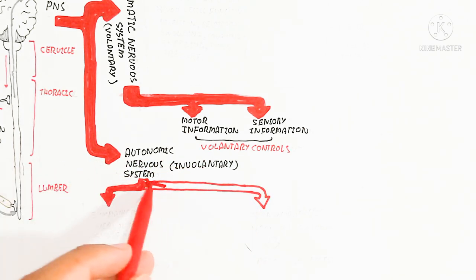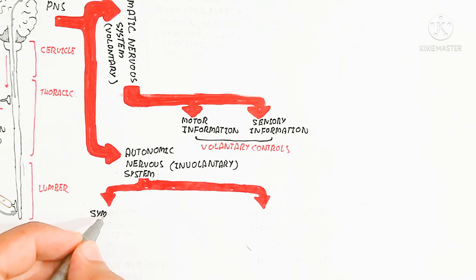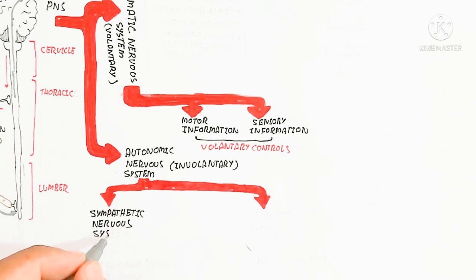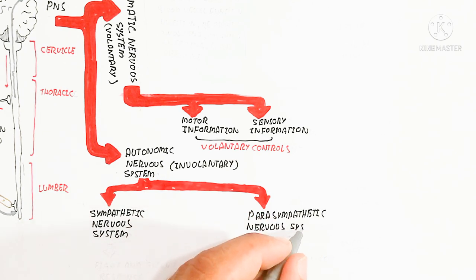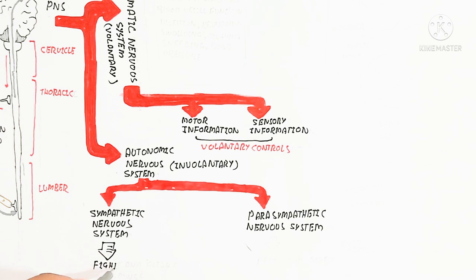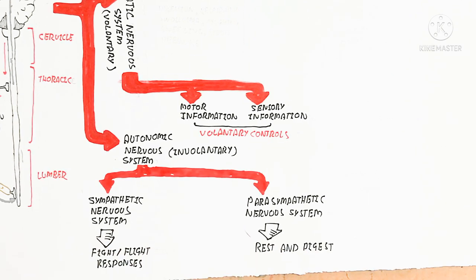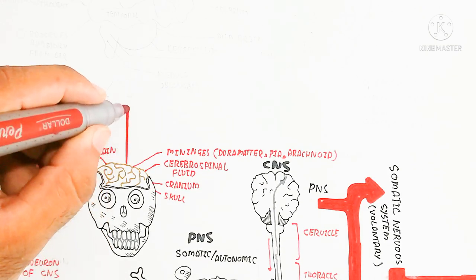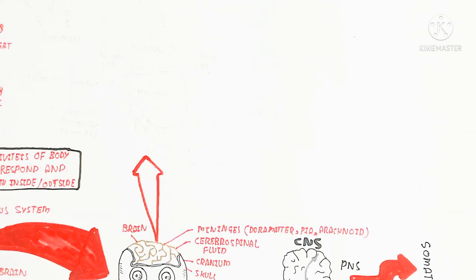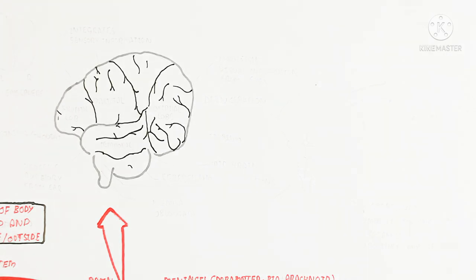Sensory neurons are used for the sensation of pain, touch, and pressure. The autonomic nervous system is the involuntary system, made up of the sympathetic nervous system and the parasympathetic nervous system. The sympathetic nervous system is used for the alert, fight-and-flight response during pain or other activities, providing activeness. The parasympathetic nervous system is the rest-and-digest response, stimulating digestion, rest, and sleep.